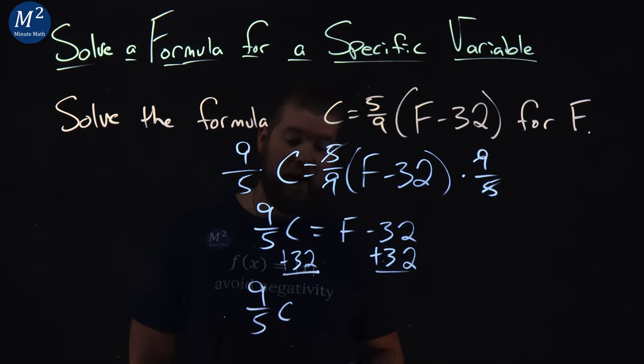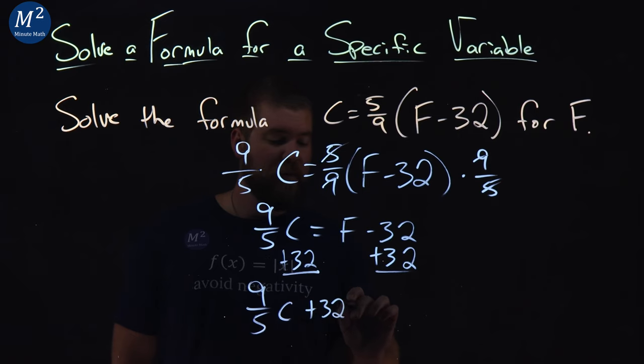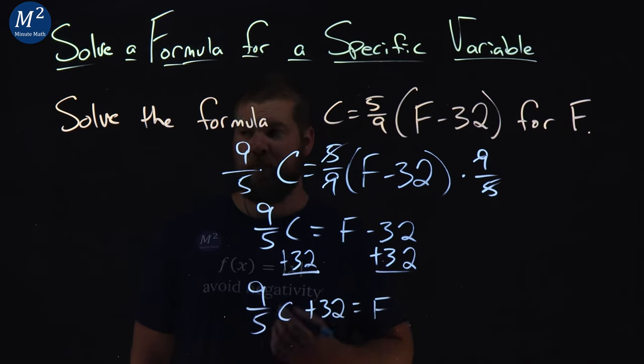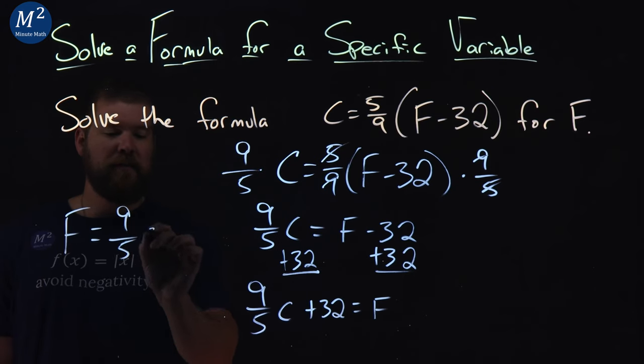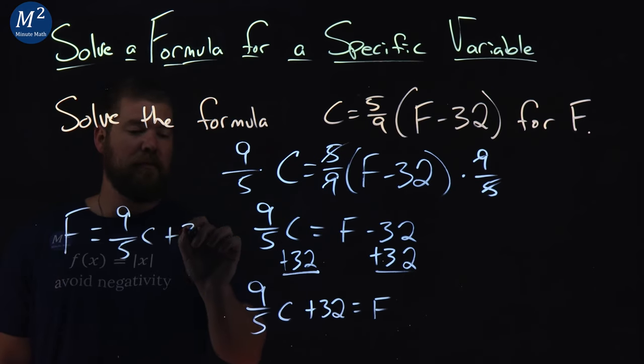Don't forget the plus 32. Common mistake there. Well, it happens. Plus 32 is equal to F. So if I want to rewrite that, I can say F now is equal to 9 fifths C. Put F being first. Plus 32.